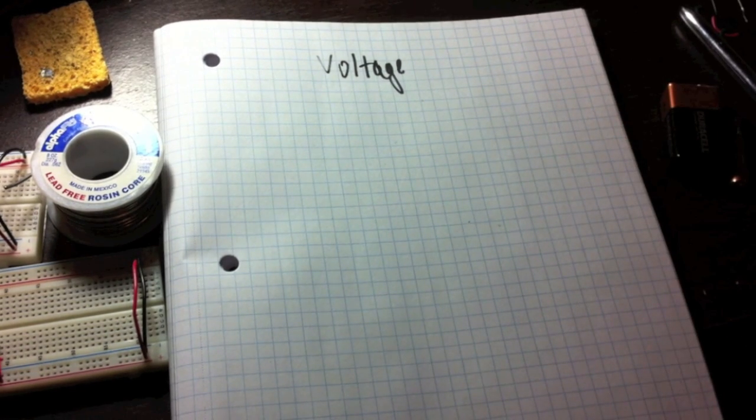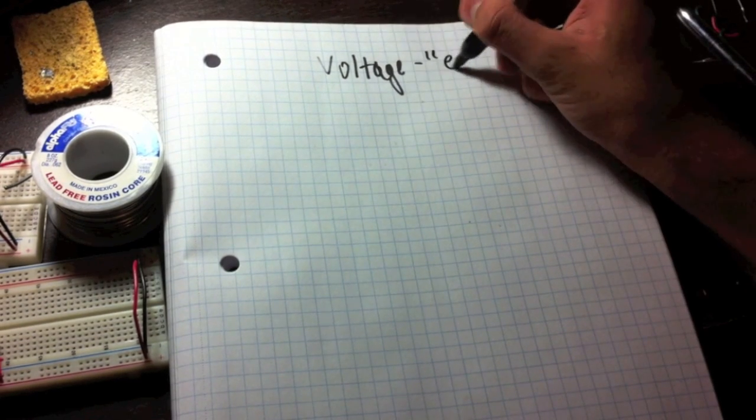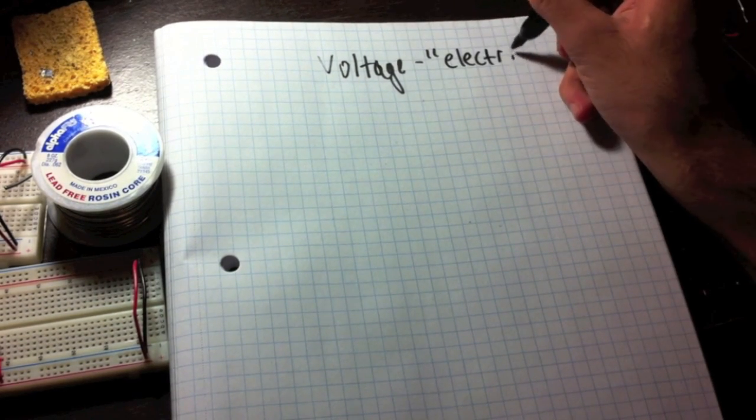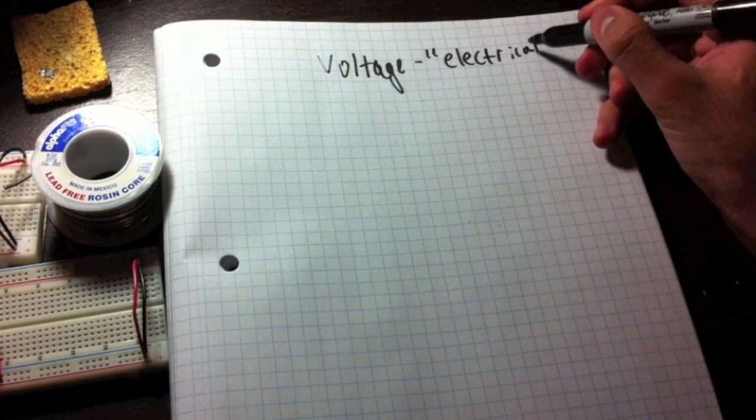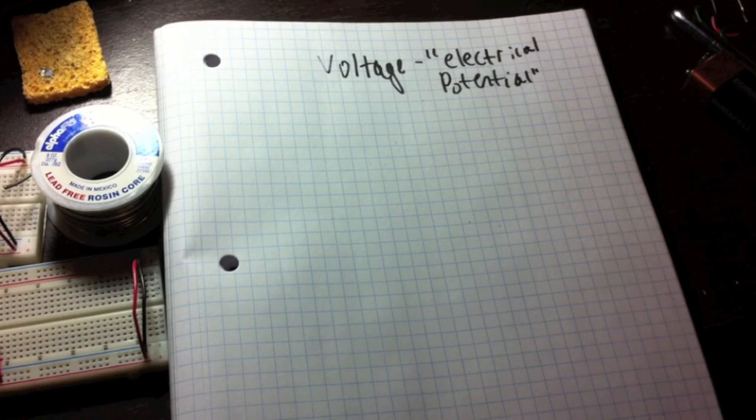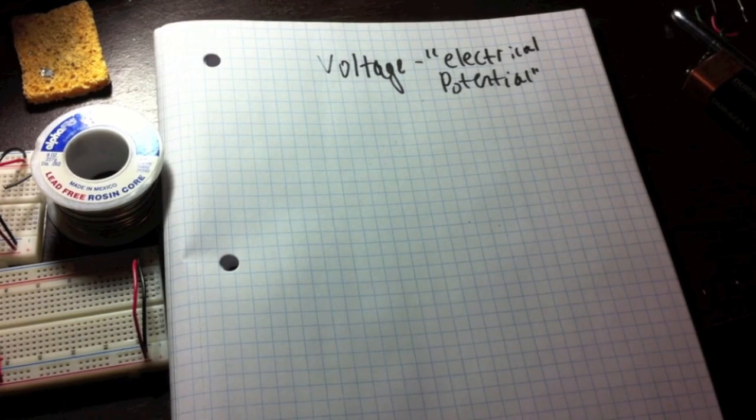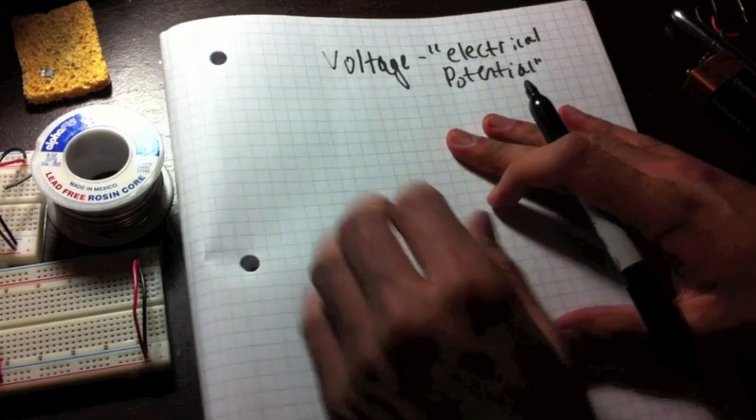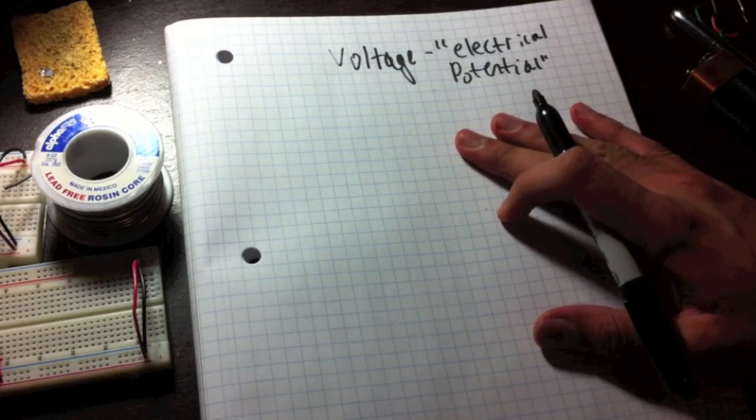But what exactly is voltage? Well, the definition of voltage is electrical potential. Okay, well what do they mean by that? Basically, think of it like the pressure.